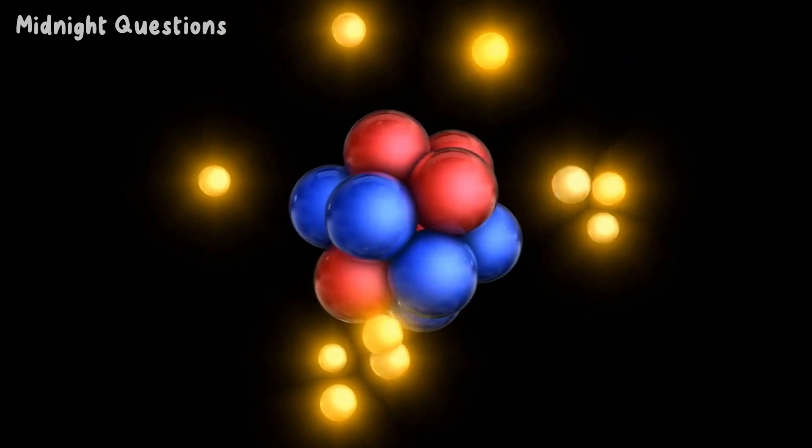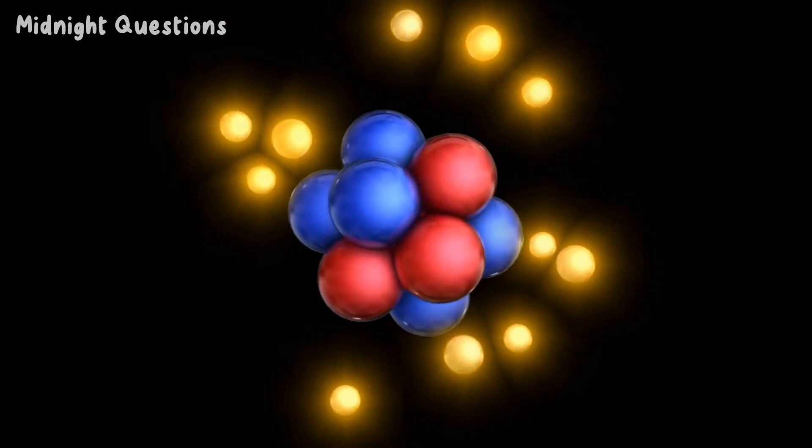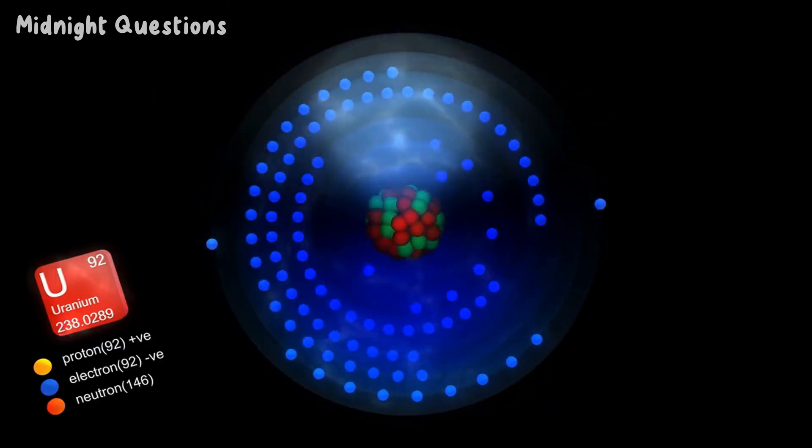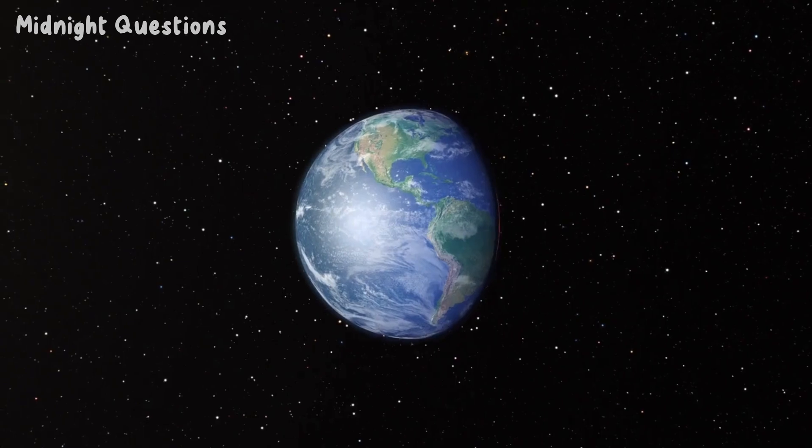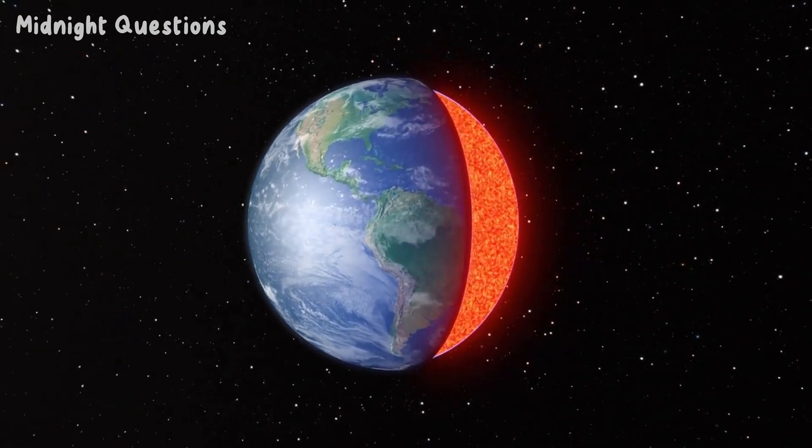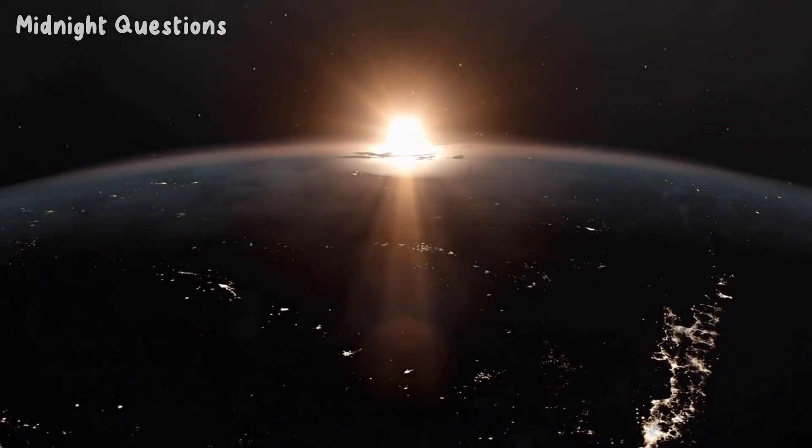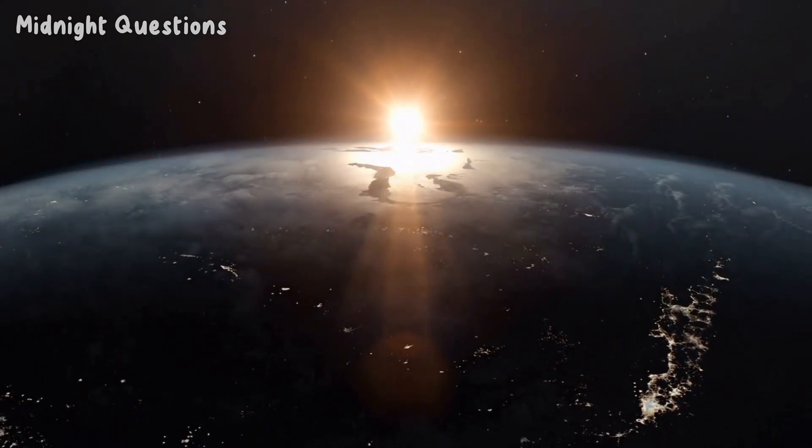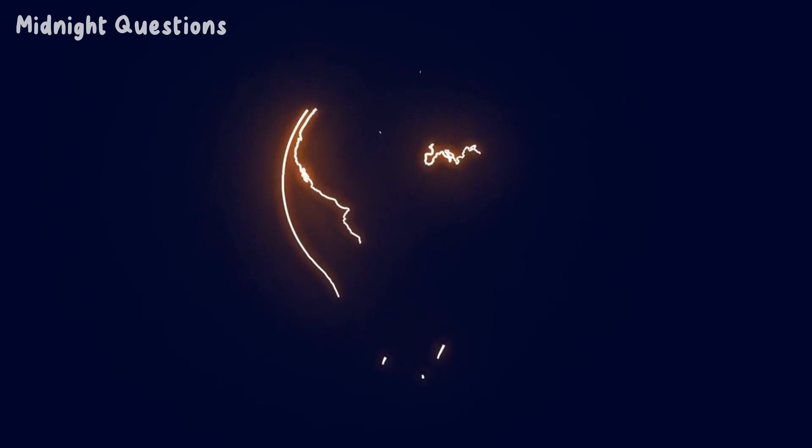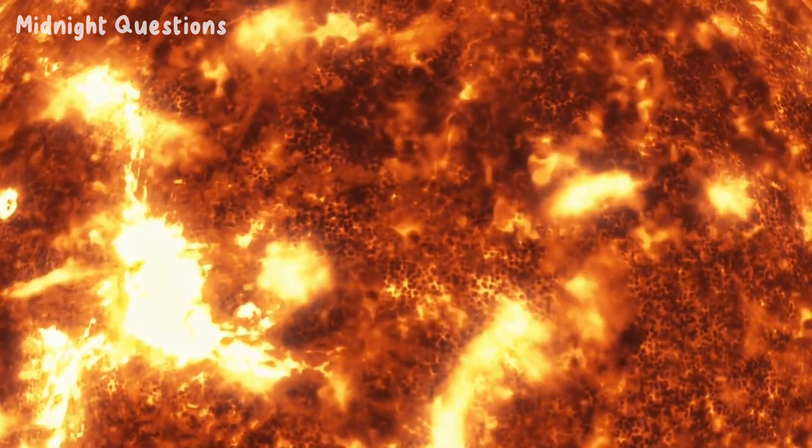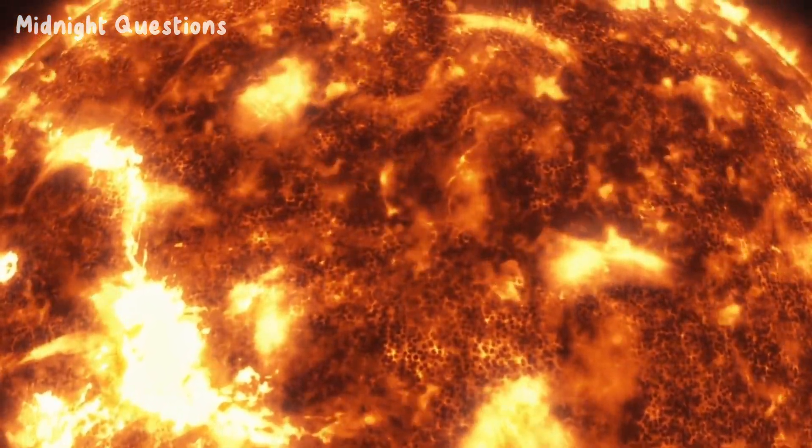But why is the Earth's core so hot? The answer lies in the process of radioactive decay. Radioactive isotopes such as uranium and thorium are present in the Earth's mantle and core. As these isotopes decay, they release heat energy, which causes the temperature of the surrounding material to rise. This process is known as radiogenic heating. However, radiogenic heating alone isn't enough to explain why the Earth's core is hotter than the Sun.